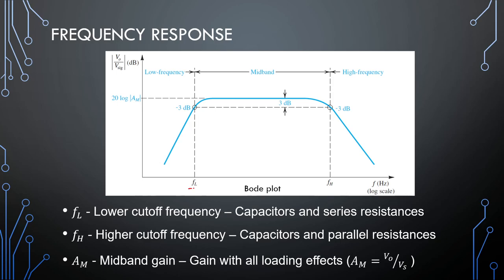Every amplifier has a lower cutoff frequency, and the capacitors that we insert externally as bypass and coupling capacitors cause this low cutoff effect. Then we are going to look at the higher cutoff, which the transistor is mostly responsible for. Analysis and design for the lower frequency go hand in hand, and the higher frequency is mostly analysis — the design for that is quite easy once the analysis is done.